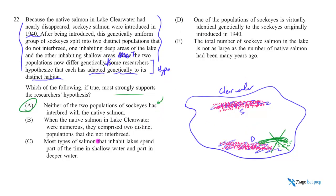Look at answer B, for example: back when the native salmon weren't endangered, they comprised two distinct populations that didn't interbreed — they also lived in shallows and deeps. If you didn't know what you were trying to do, that might sound kind of right. But were they genetically different when they lived in the shallows and deeps? If they were genetically different because of different evolutionary pressures from the shallows versus the deeps, then maybe it has some relevance. But just telling me they lived in shallows and deeps — maybe they were genetically the same, in which case B becomes a weakening answer instead of a strengthening one. It's totally irrelevant.